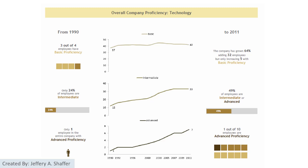The message is spelled out clearly: in 1990, only 20% of employees were at the intermediate level and only one single employee was advanced. However, in 2011, nearly half of the company was at the intermediate or advanced level. We can clearly see the difference.